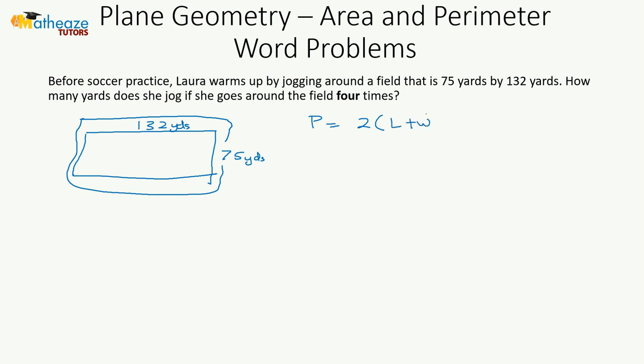The perimeter of a rectangle is 2 multiplied by the sum of the length and the width. Let's look for the perimeter of one lap around the field. This is going to be 2 multiplied by the sum of 132 plus 75 yards—that gives us 207. So this is going to be 2 multiplied by 207 yards, which is 414 yards.